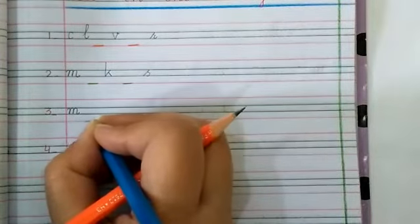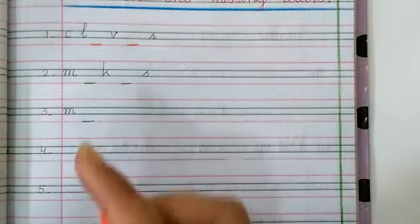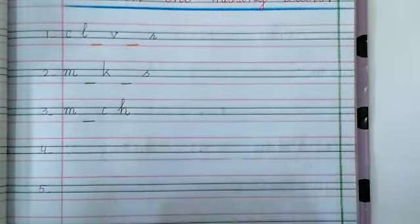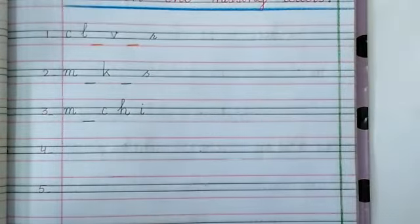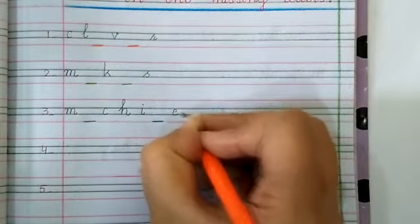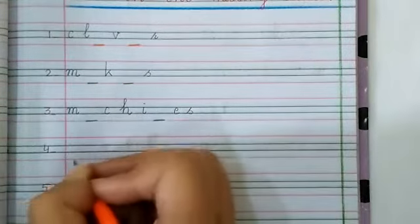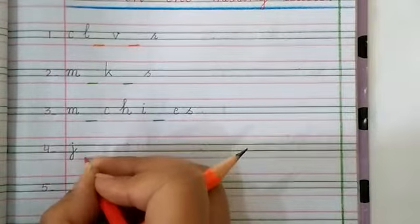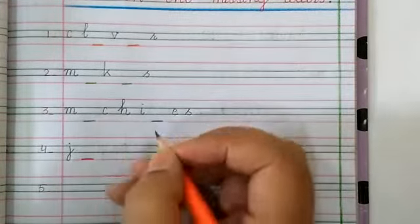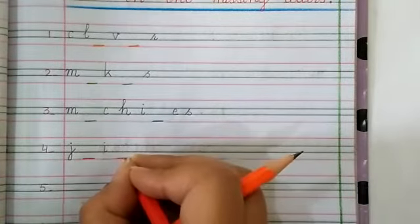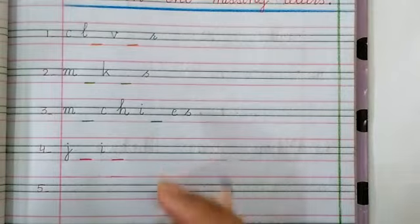Number three word is M dash dash M dash TH dash I dash dash ES. Go to the next word. J dash I dash dash ED.